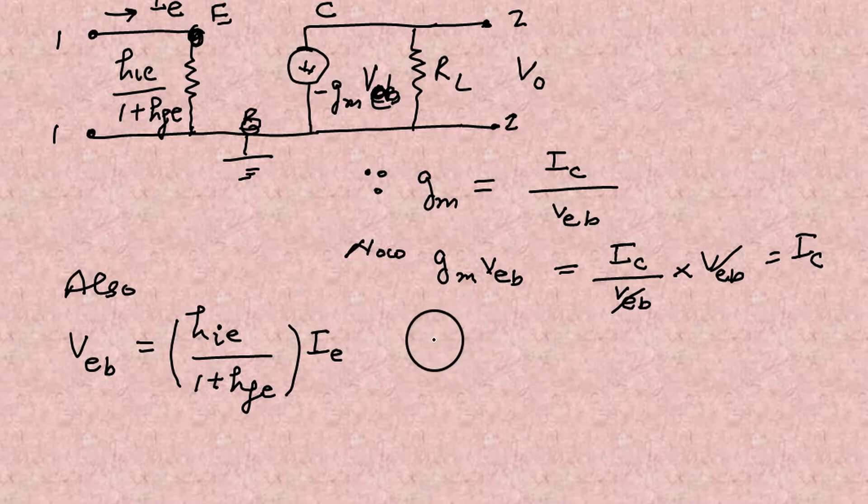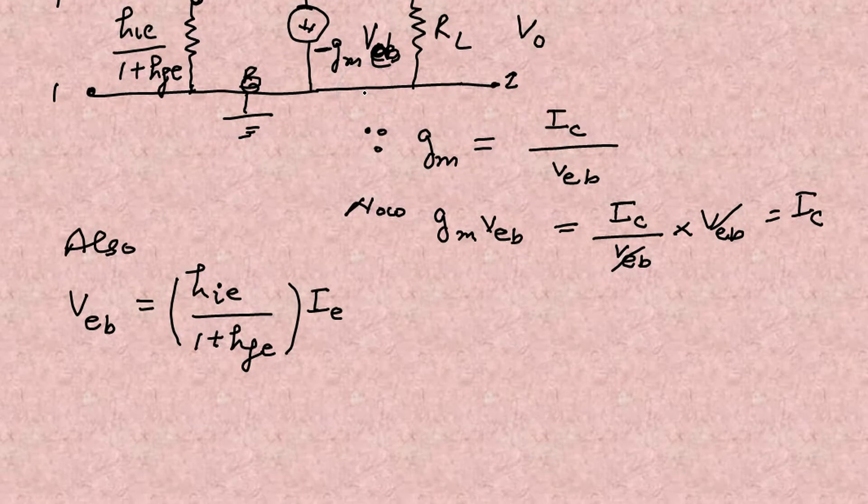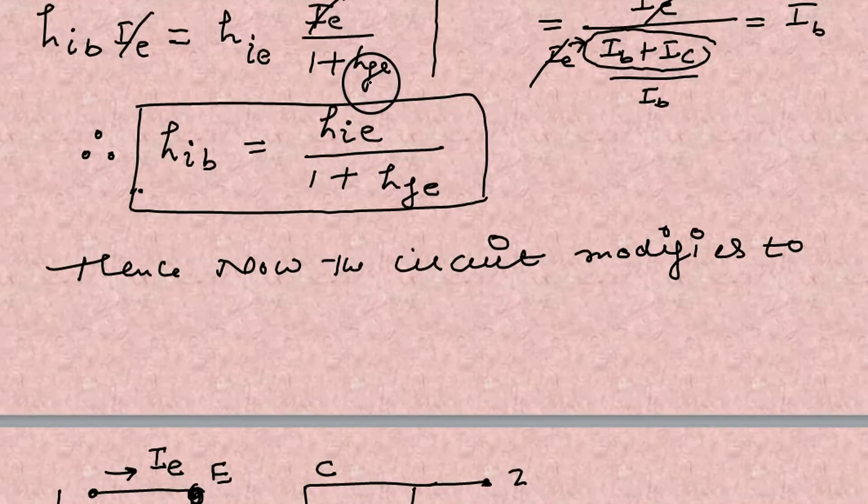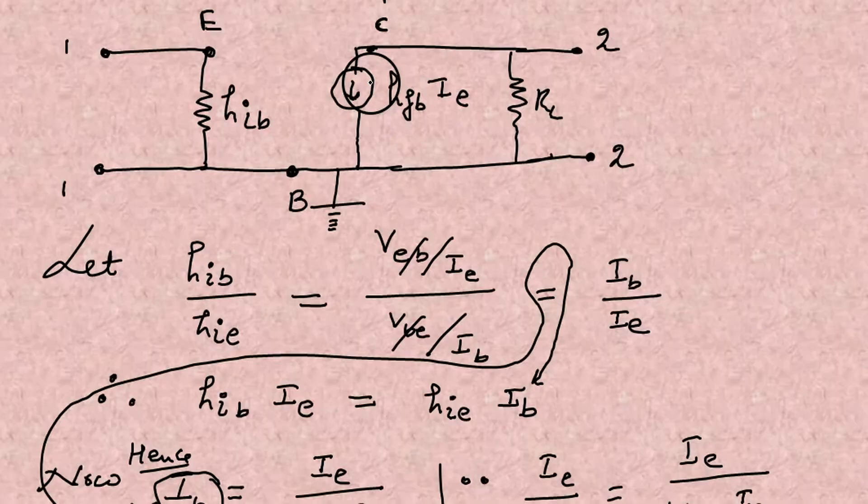So VEB is the potential between emitter and base. The resistance times IE. The resistance is HIE upon 1 plus HFE. You look in the diagram. The resistance is HIE upon 1 plus HFE, the resistance times IE. That becomes the voltage.